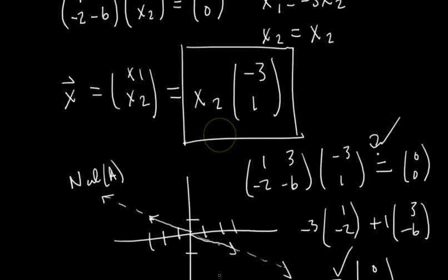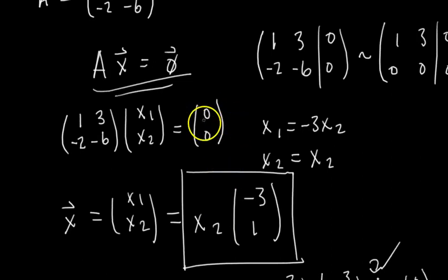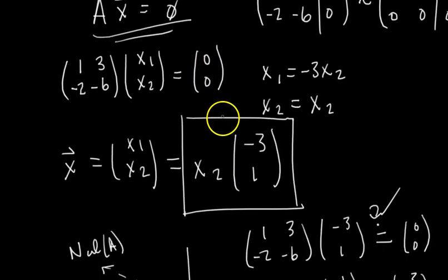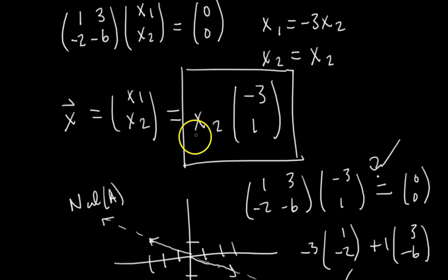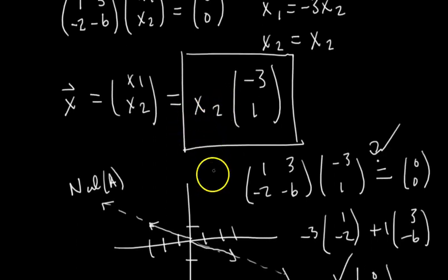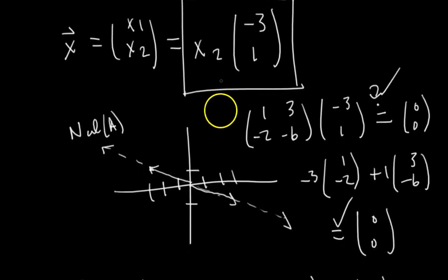So you can see, by writing the solution set to the homogeneous equation in parametric vector form, we get an easy way to see what the null space is geometrically. And we can determine that, since it's in parametric vector form, we see that the null space is just the span of this one vector. That's what I'm trying to say. Okay. Hopefully that makes sense.